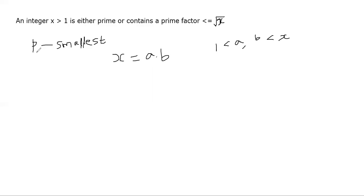Now let's think about the fact that p is the smallest prime factor. That tells us that our a must be greater than or equal to p and b must also be greater than or equal to p because we assumed p being the smallest prime factor of x. This comes directly from our assumption that p is the smallest prime factor of x.